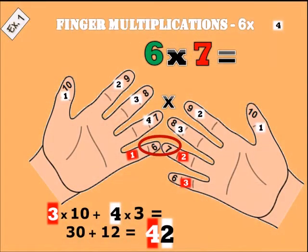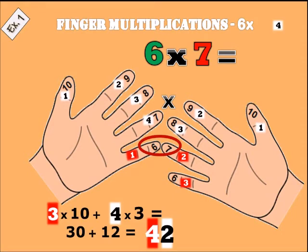Example two: six times seven. You put the ring finger and the little finger together and count down — one, two, three — that is three times ten equals thirty. On the left hand we have four, right hand we have three — three times four is twelve. Thirty plus twelve is forty-two. Six times seven equals forty-two.